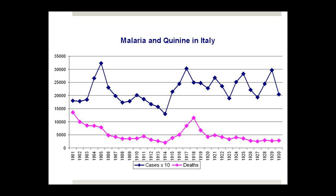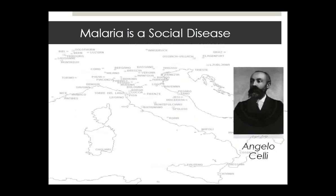The problems with quinine distribution were that it really didn't do anything about transmission, even though they thought it would when they initiated the program in Italy. Whereas if you're actually doing vector control well, you can eliminate transmission in particular areas. There was also a real need for a higher level of cooperation on the part of the population at risk than is necessary in vector control. And beyond a medical problem, it was also a social problem.